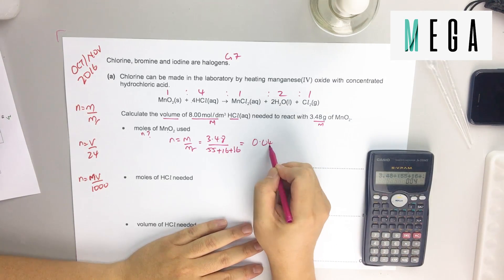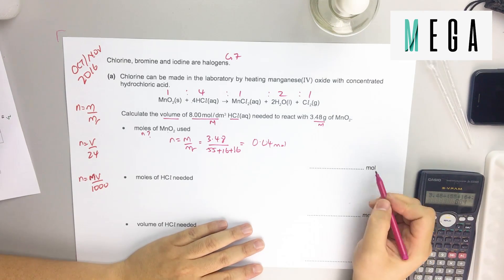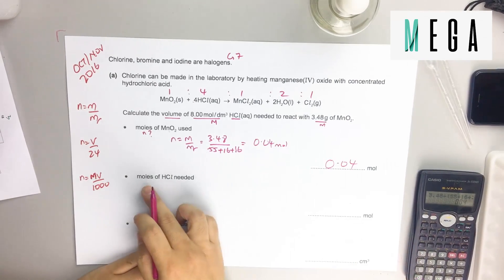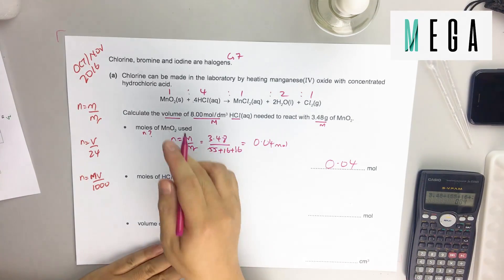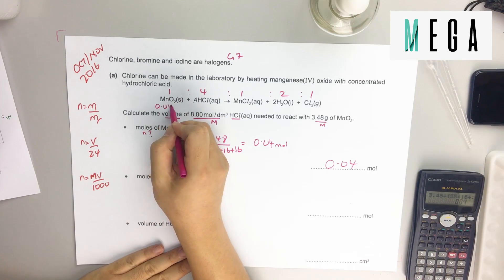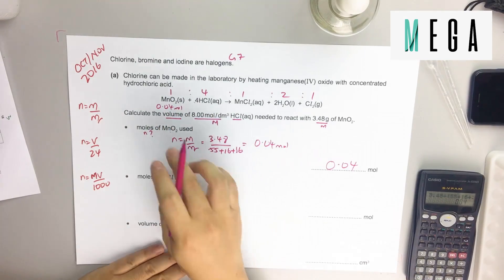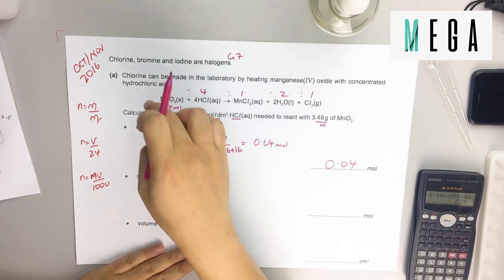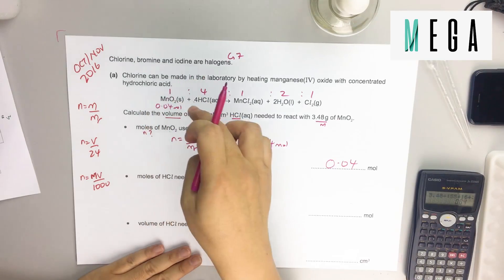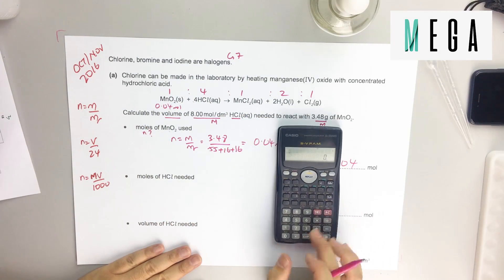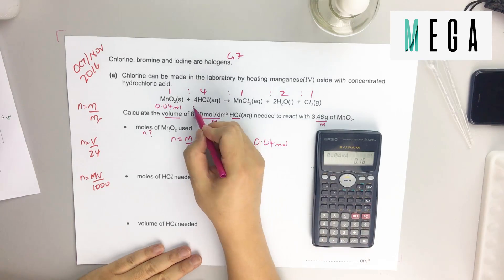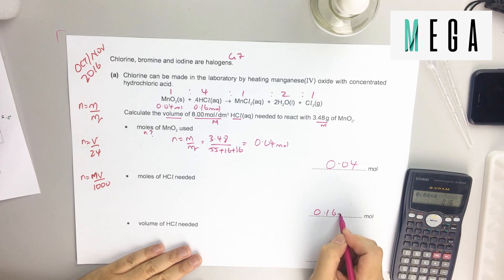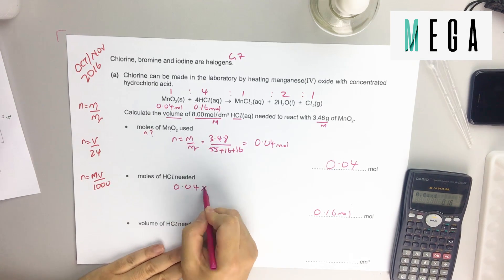So 0.04 mole. You see mole - they give you even more tips to tell you that you need to find mole. Then number of moles of HCl needed. Since you have this 0.04 mole, you see from using the equation, jump from one chemical to another. I'm going to find HCl, so 1 to 4 - 0.04, then you need to times 4. Use the calculator. 0.16 mole. So very easy, 0.16 mole. If you want to show the calculation, it will be good.